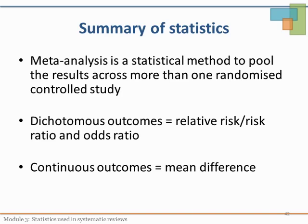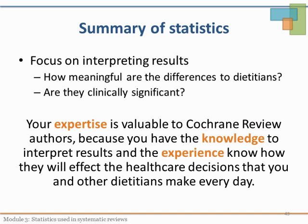In summary, in most systematic reviews you will see that authors have pooled results using a meta-analysis and presented them in graphs called forest plots. In the text of the review, they will report on the relative risk, risk ratio, odds ratio, or mean differences. It is not up to you to know whether the calculation was correct or how it was calculated. Over time, you as a peer reviewer will be able to provide more feedback on the statistics. But as a dietitian, it is important that you focus on the interpretation of those statistics and how meaningful those differences really are in practice. Your clinical experiences are valuable to the authors for how to interpret the results and how they might affect the healthcare decisions you and your colleagues make on a day-to-day basis.